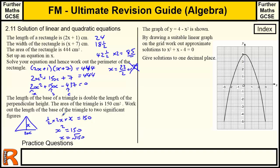And we want the base, so that's double x. We just need to times that by 2. So we want 2 times the square root of 150. And we want that to 2 significant figures.